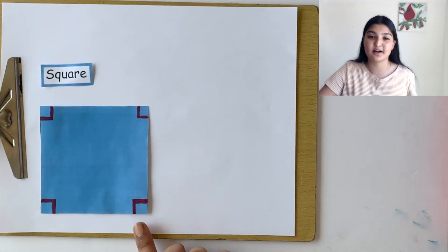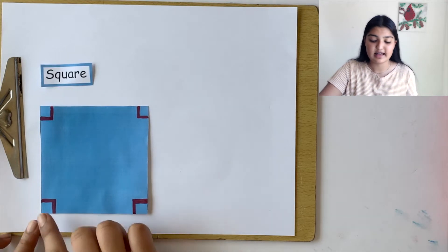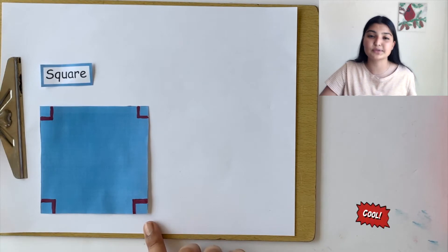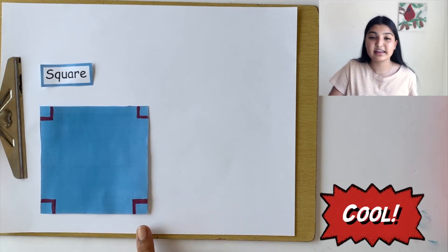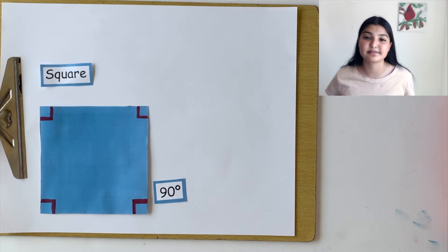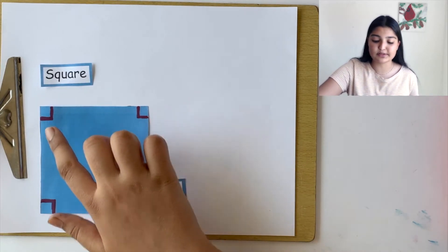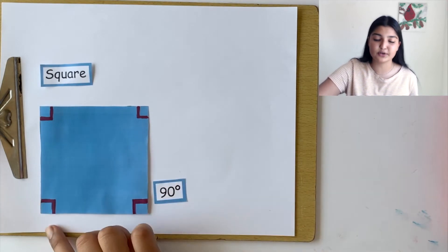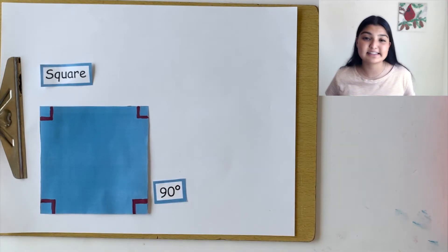This is a square. As you can see, a square has four sides and it has four angles. Each one of these angles is a right angle, which means that it measures 90 degrees. In fact, all four of these angles measure 90 degrees.